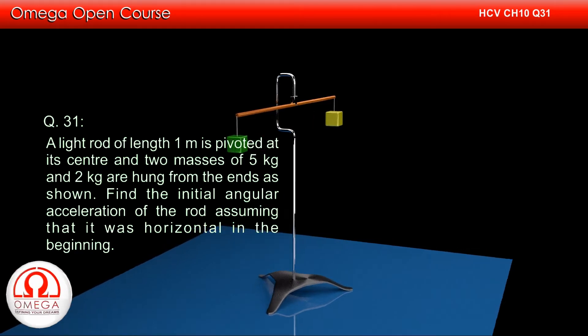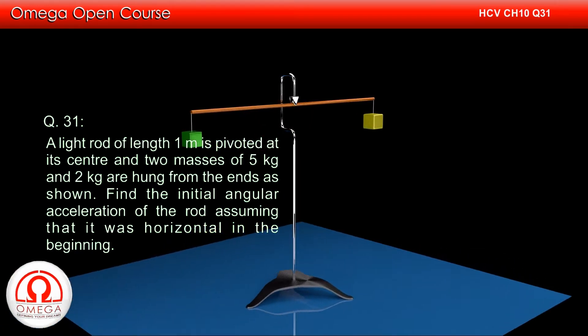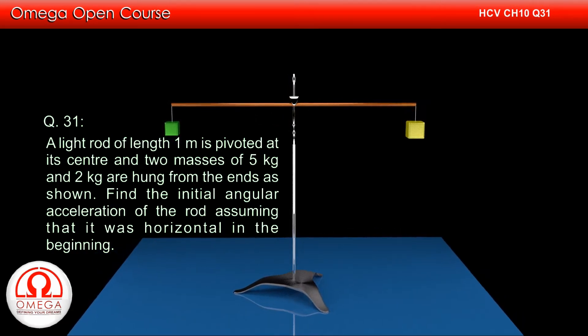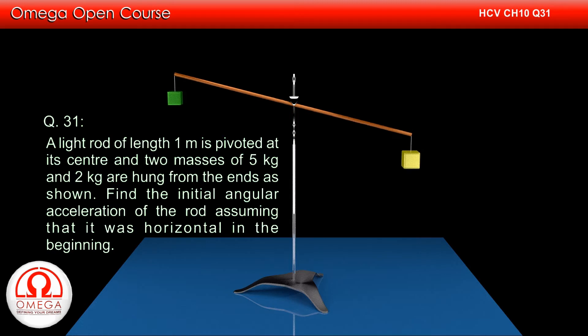A light rod of length 1 meter is pivoted at its center and two masses of 5 kg and 2 kg are hung from the ends as shown. Find the initial angular acceleration of the rod assuming that it was horizontal in the beginning.